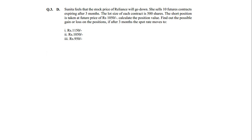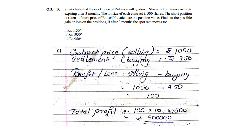Third scenario: the contract price is again selling at 1050, but now the buying price is 950. Profit and loss = selling minus buying = 1050 − 950 = profit of 100 rupees per share. Total profit is 100 × 10 × 500 = total 5 lakh rupees.